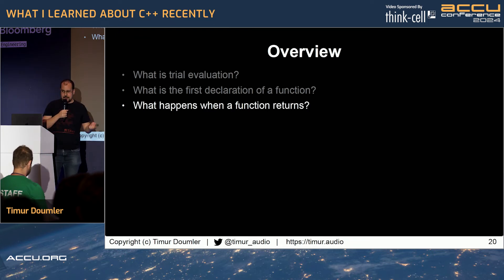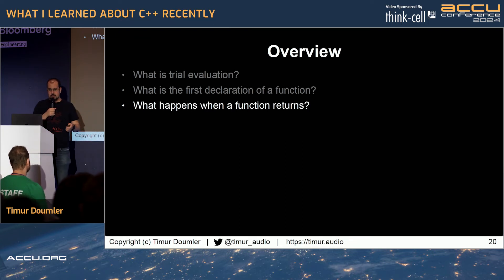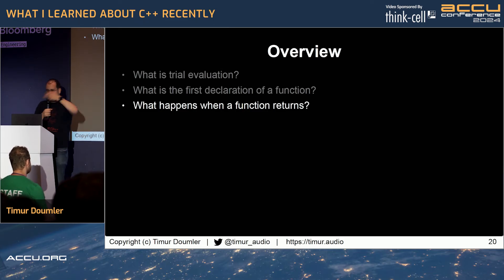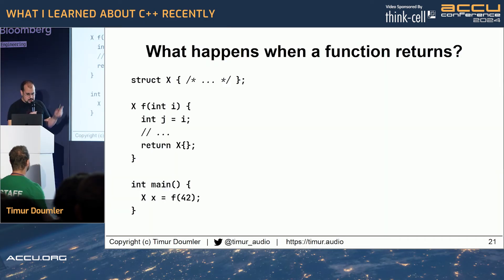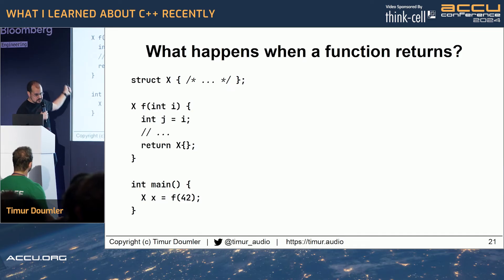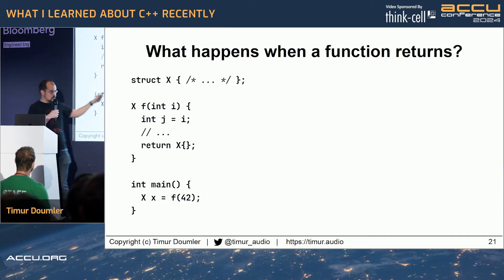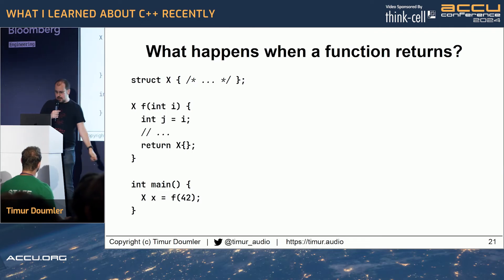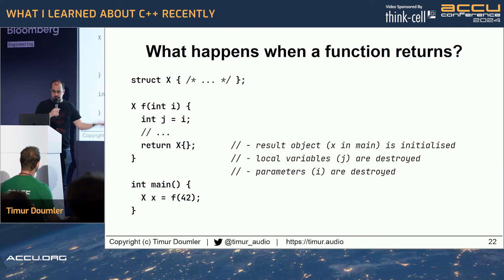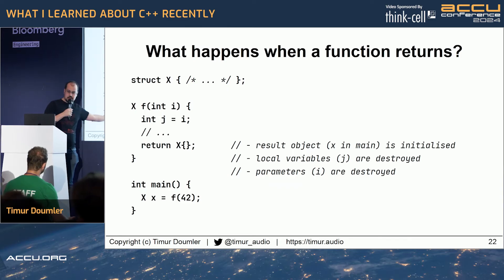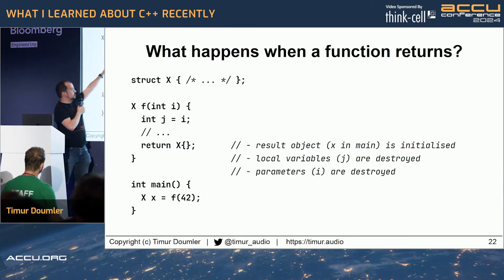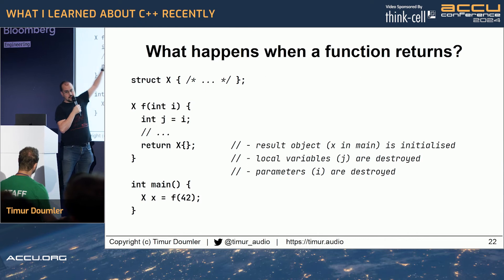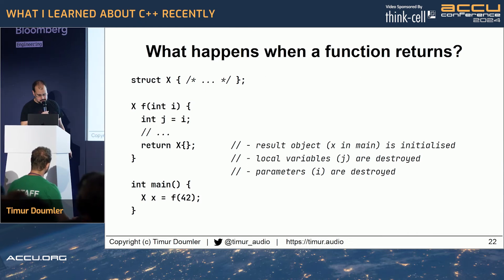The third thing is: what happens when a function returns? I thought we know this — return value returns the value, right? No. There's a lot more going on. Say we have a struct x and a function f that returns an x, and in main we initialize an object of type x with the return value of f. When we reach the return statement, it turns out: first this x is initialized, then local variables like j are destroyed, and then parameters are destroyed. That's the order in which things happen.